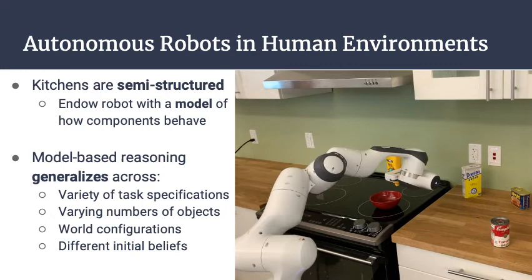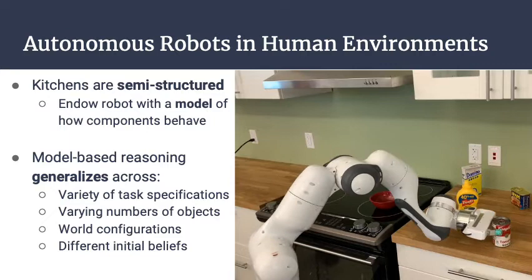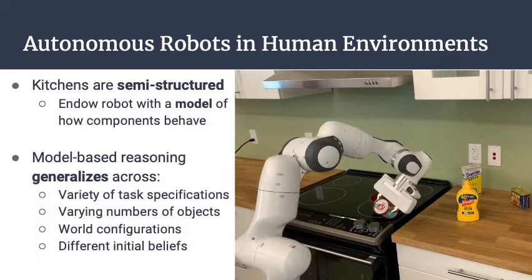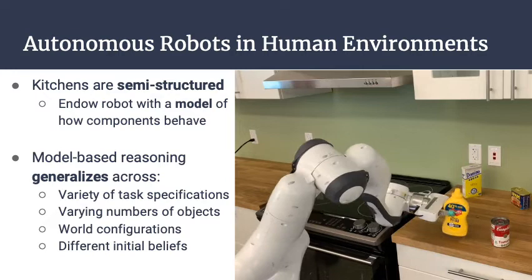Our goal is for autonomous robots to be able to reason about and act intelligently in human environments. These environments are often semi-structured in that the robot may know roughly the types of objects that may be present and maybe some priors about where they would be in the world. However, there is an enormous variety in the number of goal specifications by the human, the varying number and types of objects in the world, the different initial configurations of these objects, and also the initial belief for the robot.